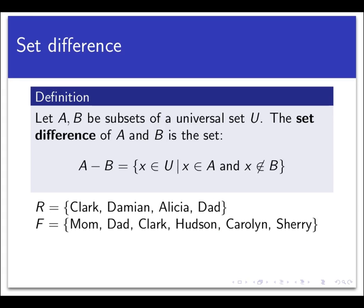So let's look at two more set operations that involve removing items from a set. The first is called the difference of two sets, and for this we're going to use the notation A minus B. The set difference of A and B is the set consisting of all elements of A that are not elements of B. For example, using the runners and families group from earlier, R minus F would be the set of all people who are runners but not family members — removing all the F people from the R list, leaving the set of just Alicia and Damian.